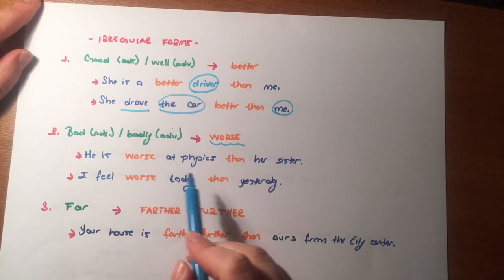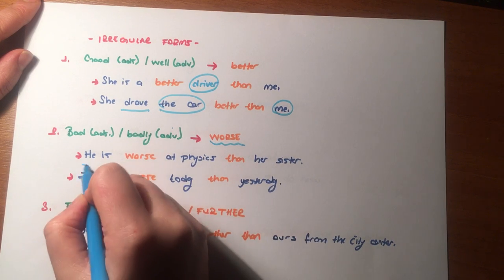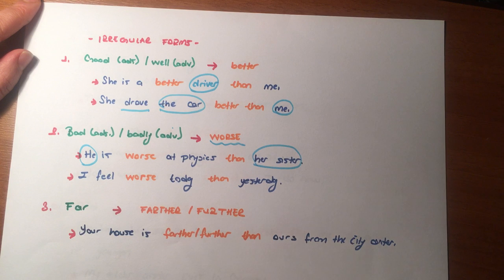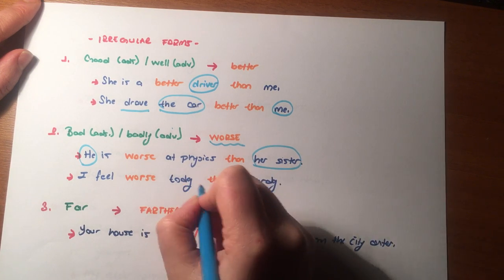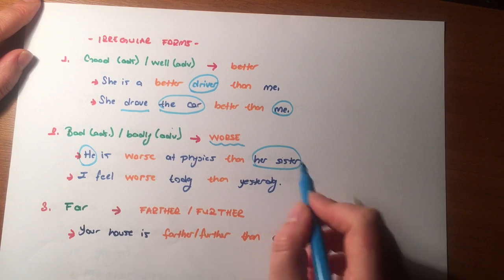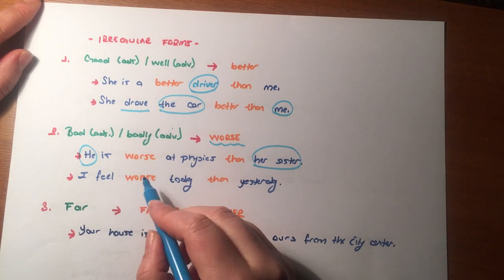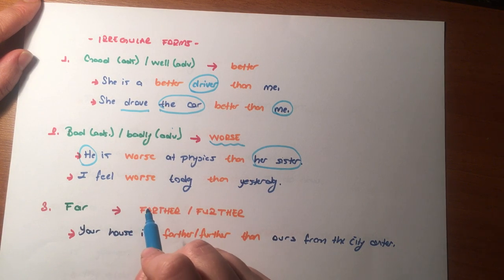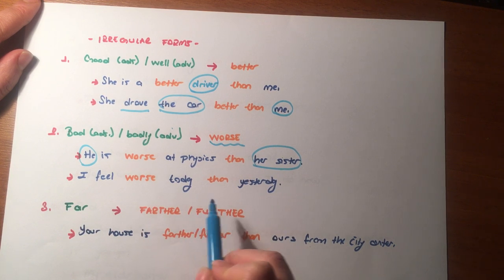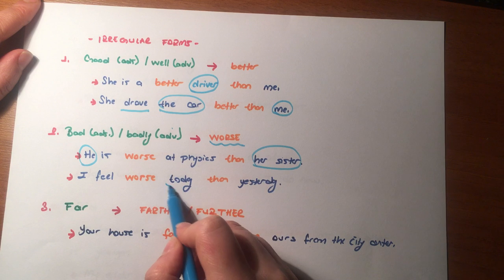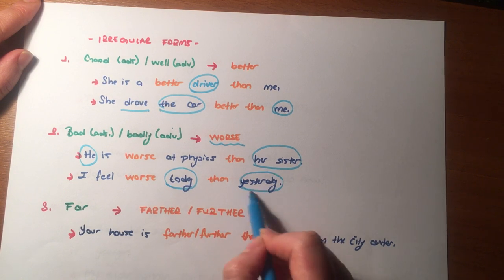He is worse at physics than his sister — I compare him and his sister. Burada 'worse than' kullandık. You can also say: he is worse than his sister at physics. I feel worse today than yesterday — I compare today and yesterday.